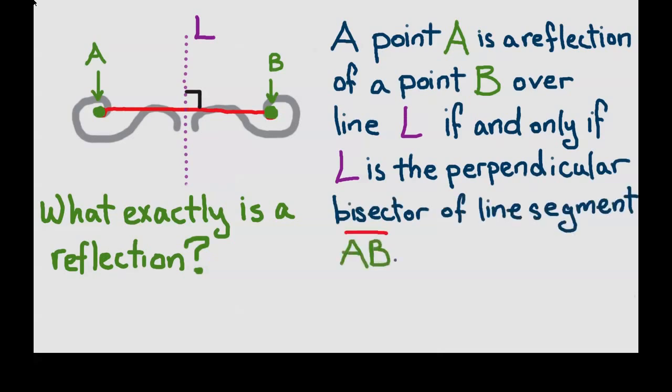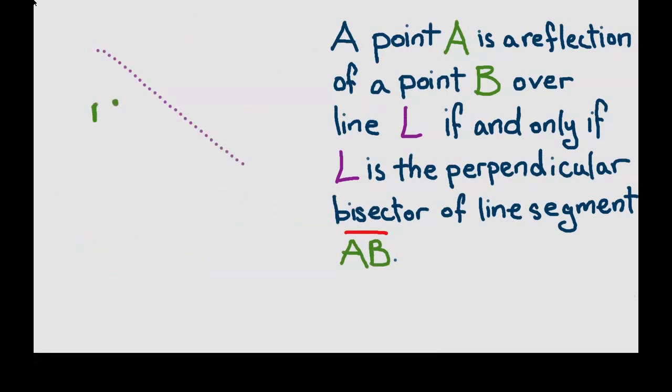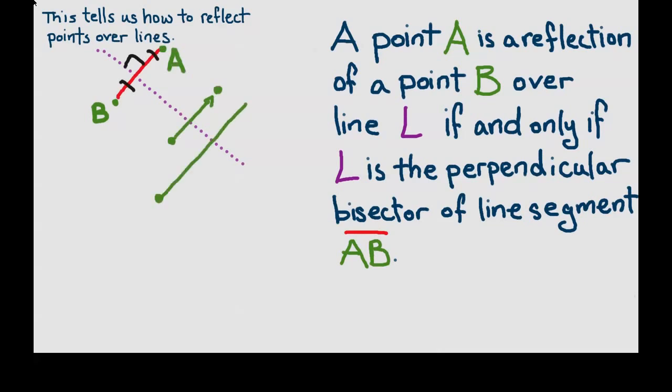What's great about this definition is that it actually tells us how to reflect points over lines. If we want to reflect the point B to the point A over the dotted line L, we simply draw in a line perpendicular to L through B that's the same distance.